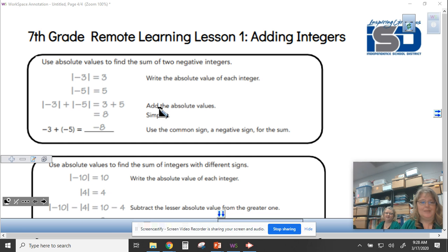Today when you're looking at this lesson, I noticed that sometimes integers have the same sign. Integers, by the way, are positive and negative numbers. And so in this first situation of negative three plus negative five, I see that both of these are negative numbers.